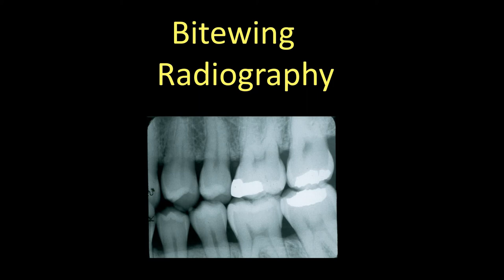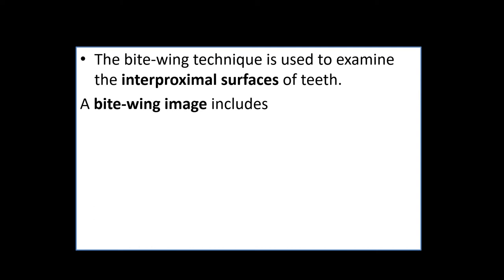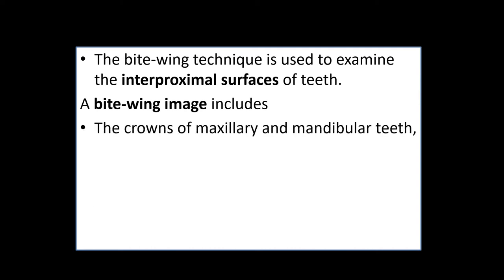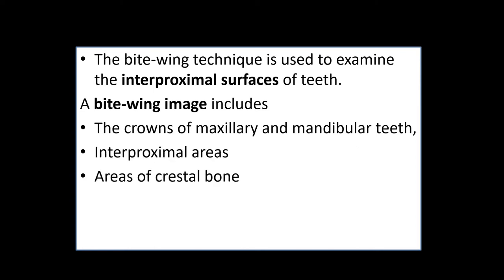Let us learn about bitwing radiography. Bitwing radiography is a technique of intraoral radiography used to examine the interproximal surfaces of the teeth. A bitwing image includes the crowns of maxillary and mandibular teeth, the interproximal areas, and the areas of crestal bone.